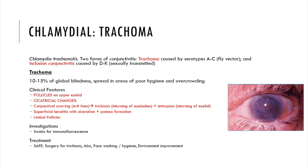The cicatricial changes mean there's damage to the conjunctiva and tarsal plates, leading to in-turning of eyelashes and the eyelid, causing a chronic inflammatory process which leads to superficial keratitis and formation of a pannus — a highly adherent membrane — and these all lead to blindness. In addition, there may be small blisters on the junction of the cornea and conjunctiva, called limbal follicles. Investigations are usually done with swabs for immunofluorescence.